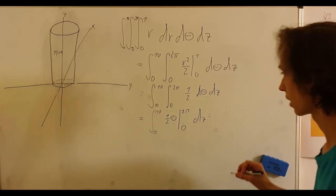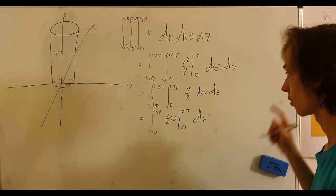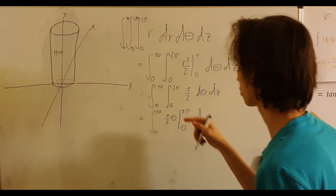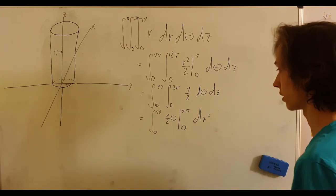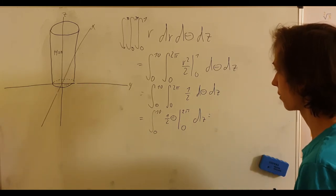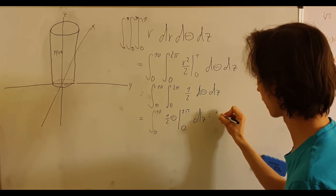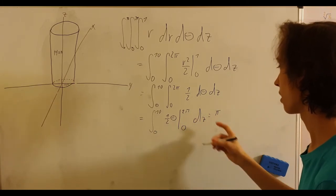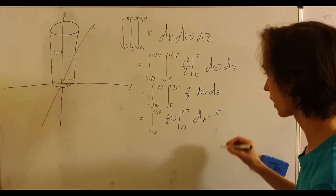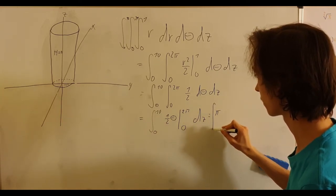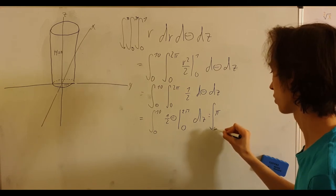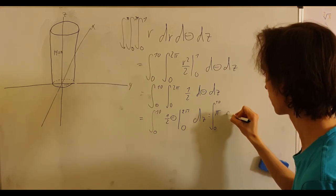And this is equal to... Let me write the solution so that we only have an integral left that is in respect to dz. We will have just pi. We will have just pi minus 0. So that's pi, and it will be in respect to dz.